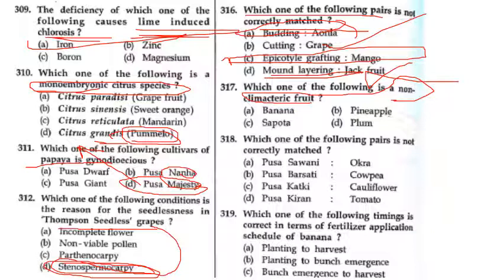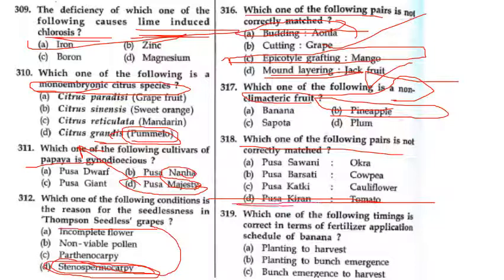Which one of the following pairs is not correctly matched? As you can see, Pusa is not tomato. Pusa Sawani is okra. Bursati, Cowpea. Kashi, Cauliflower.